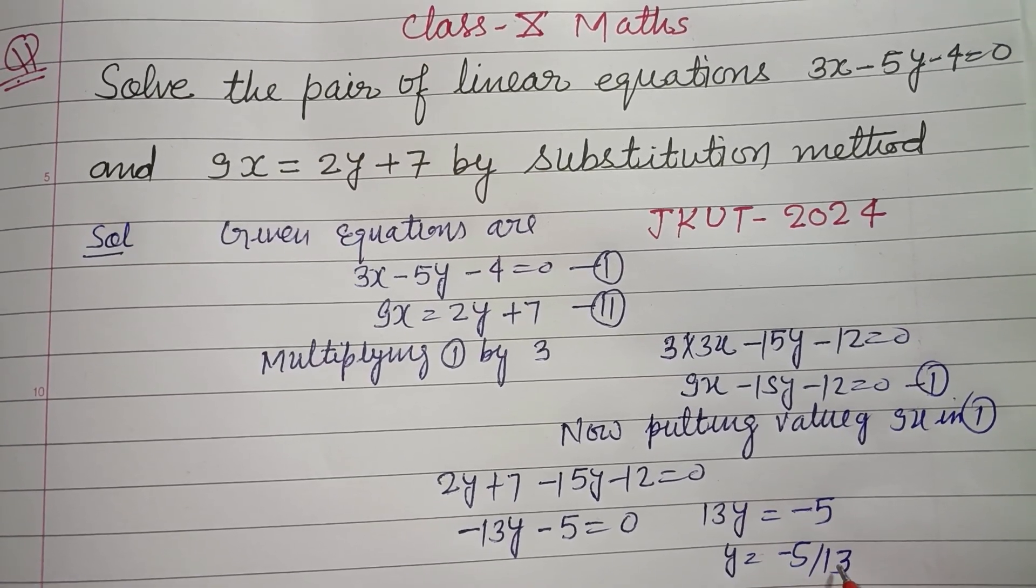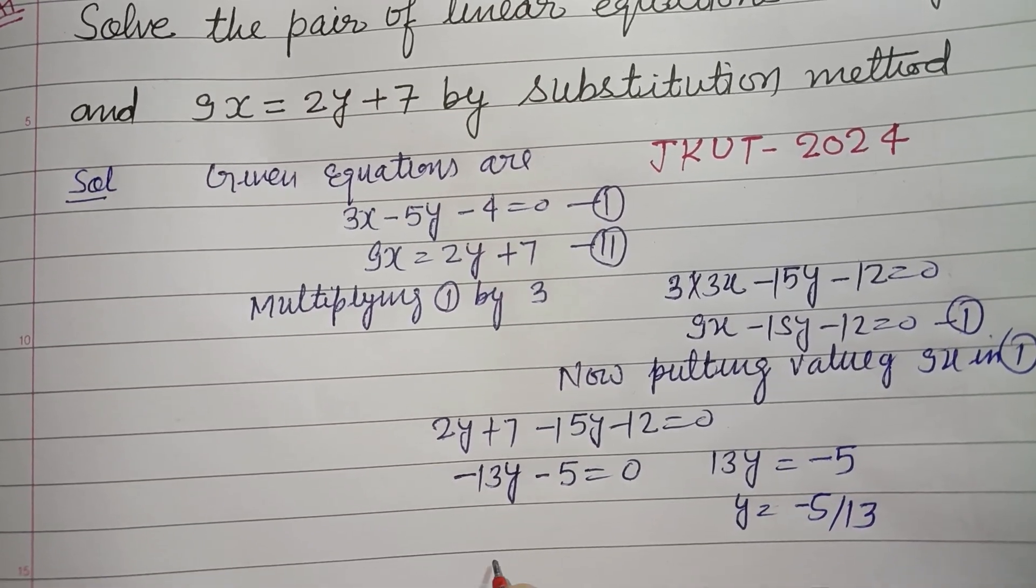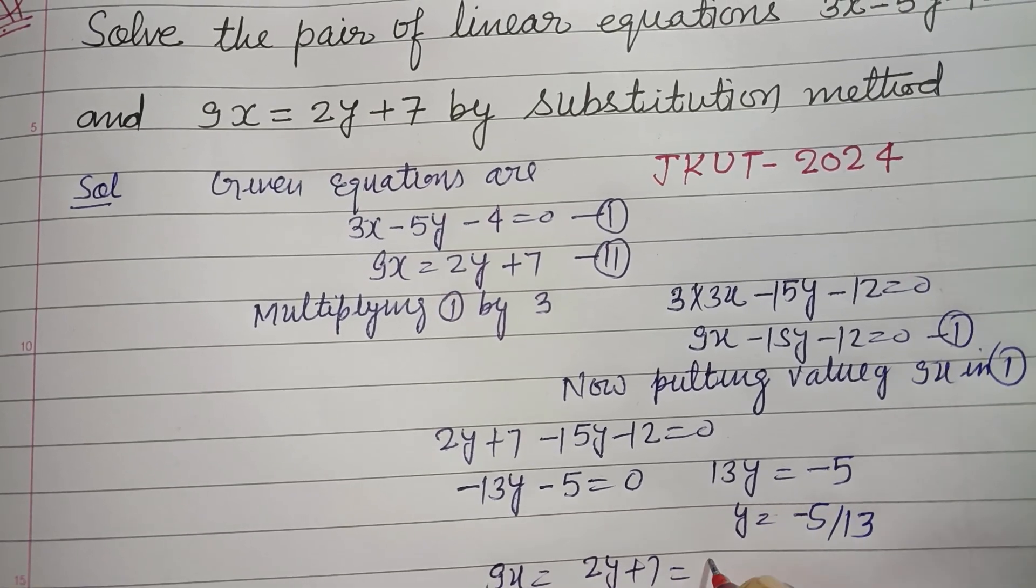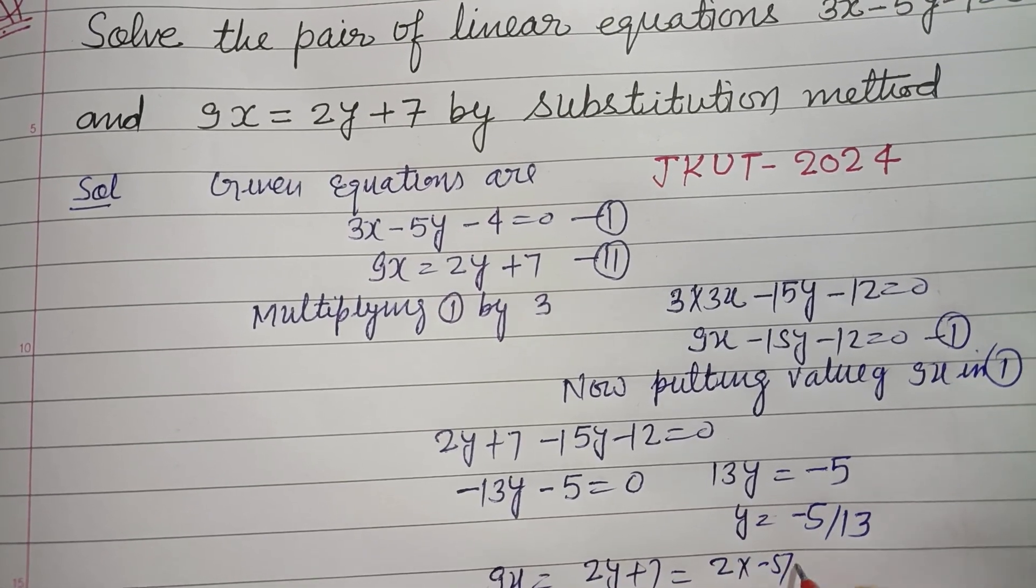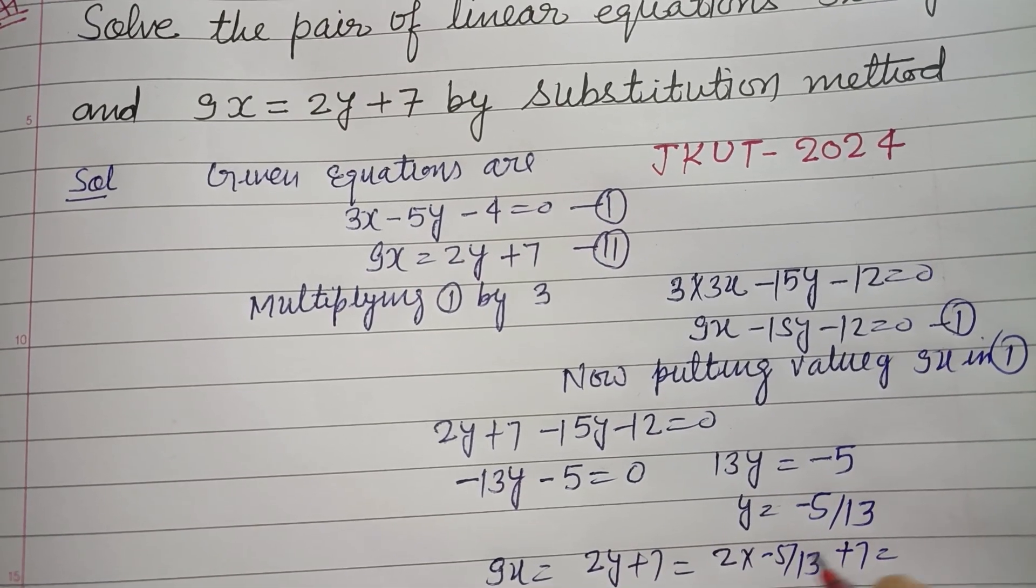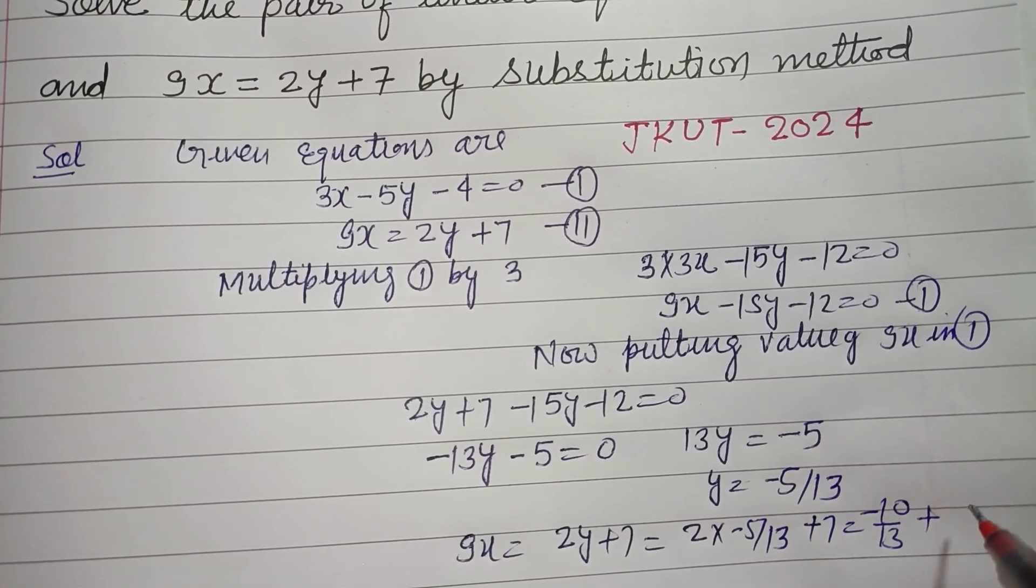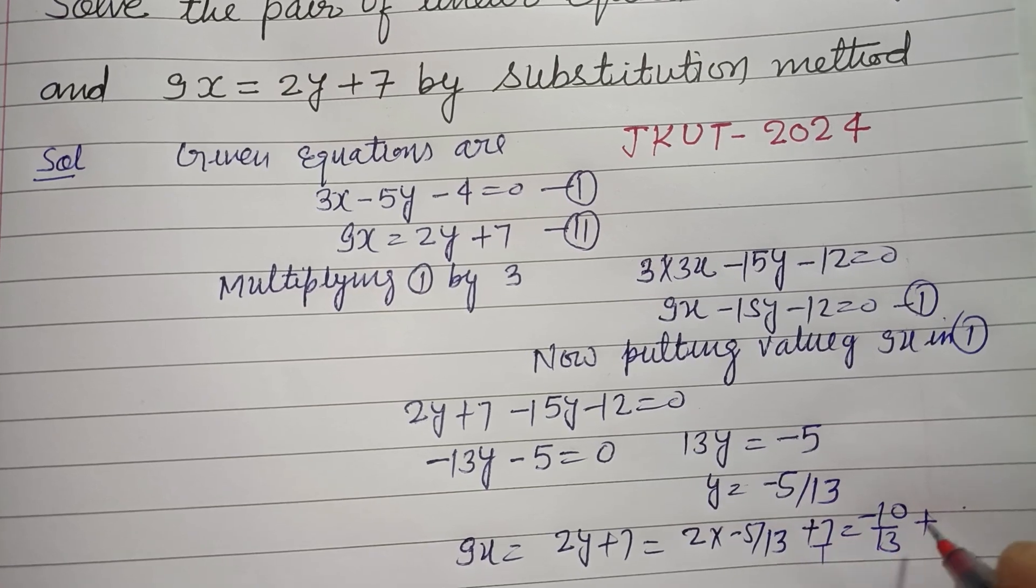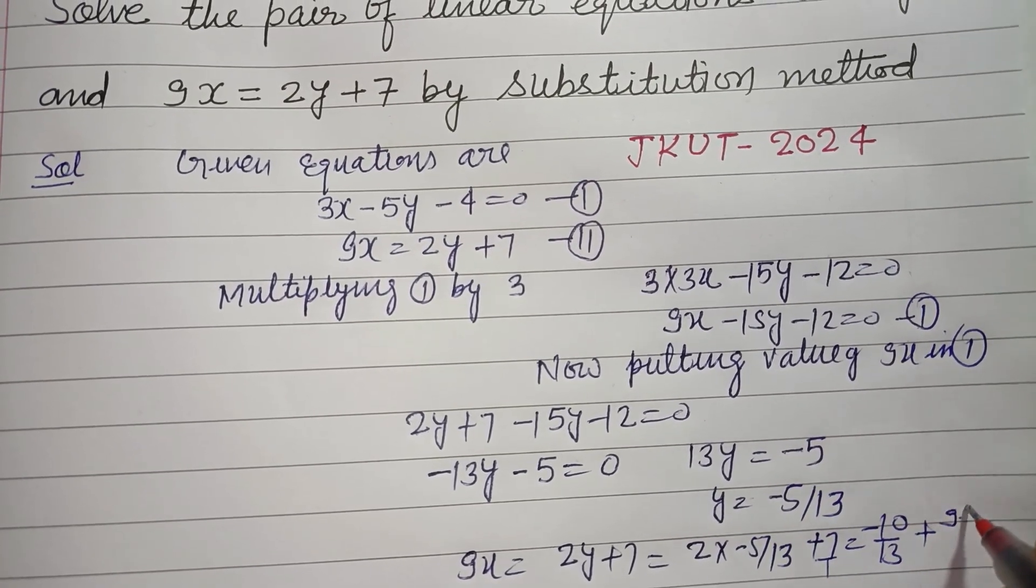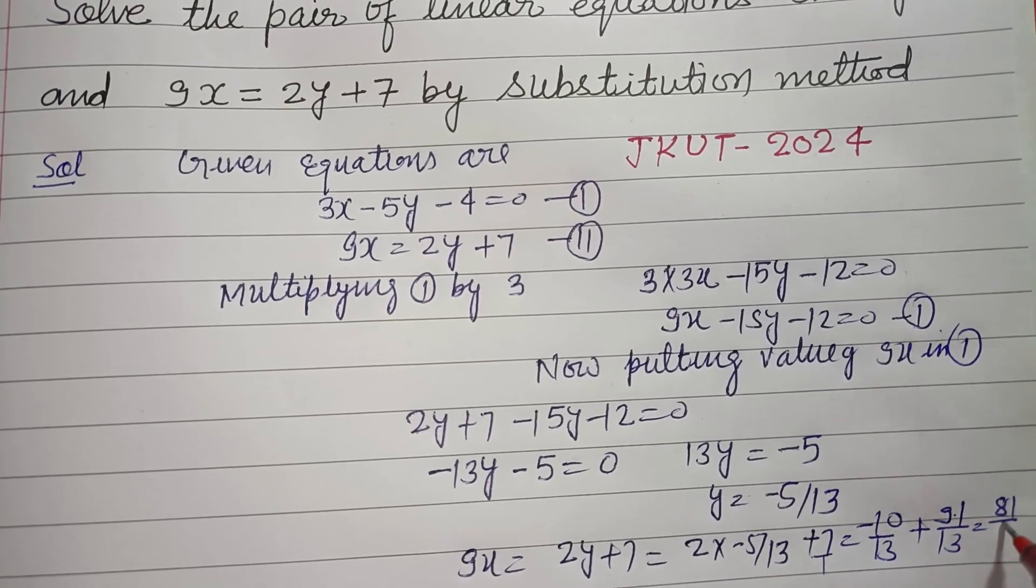If y equals minus 5 upon 13, then x equals how much? From 9x = 2y + 7, we get x = (2y + 7)/9. That is minus 10 upon 13 plus 7. We multiply 7 by 13, so 91 upon 13, that is 81 upon 13.